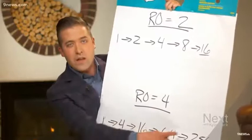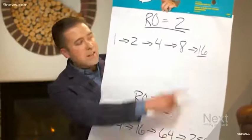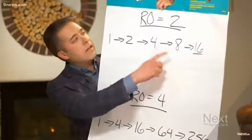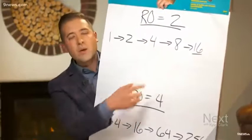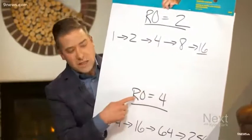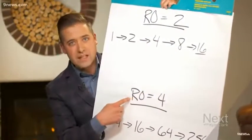And then it's 16, and then it's 64, and then it's 256 in the same period of time that a virus with an R-naught of two would have only gone to 16 people. So it's not about this being twice as bad or twice as dangerous.